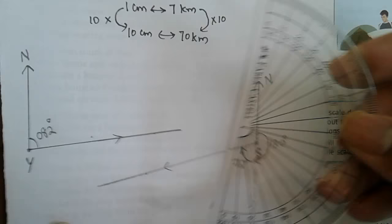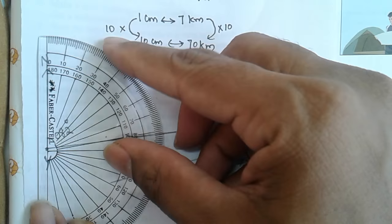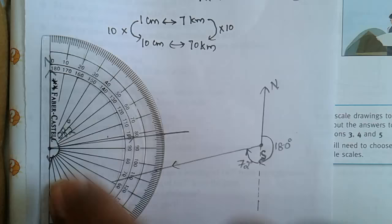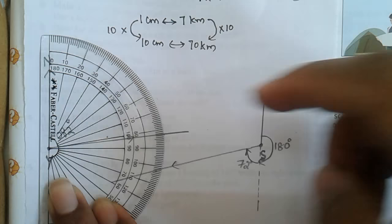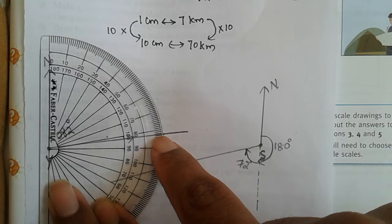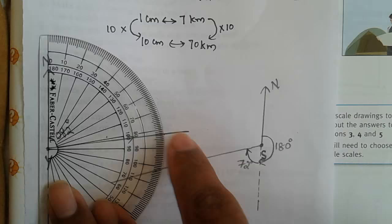Now with the help of a protractor, place the center of the protractor on this point and from north count 82 degrees: 0, 10, 20, 30, 40, 50, 60, 70, 80, 81, 82 degrees. So this is the direction in which the yacht sails.